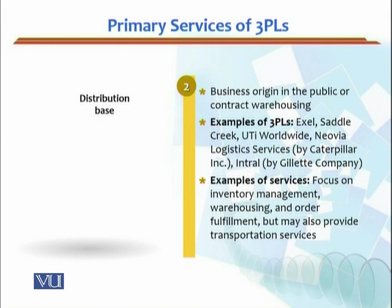The second one is distribution-based. The business origin is in public or contract warehousing — yeh primarily warehousing activities perform karte hain. Conventionally, that would be like receiving, storing, sorting, and then delivering to the destination. Yeh basic functionalities provide karte hain, although they provide specialized functionality as well. Examples of such 3PLs would be Excel, Saddle Creek, UTi Worldwide, Neovia Logistics Services (by Caterpillar), then Interall (by the Gillette Company), or JOST Services.